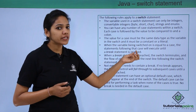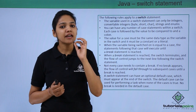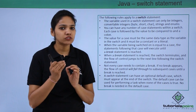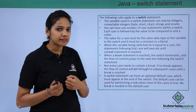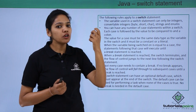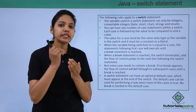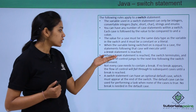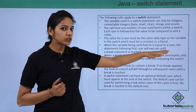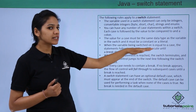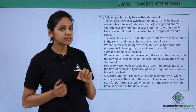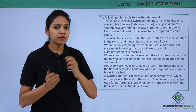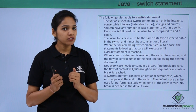Third rule: the value of the case must be the same data type as the variable. As covered in the first point, it should be an integer or a convertible integer. In our example we are comparing grades, so the variable should be of character type because the case values — A, B, C — are characters. Fourth rule: once the variable matches a case, statements following that case execute until a break statement is encountered.